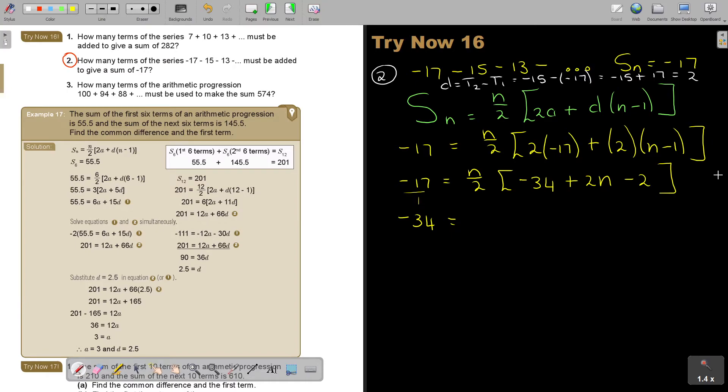So I get negative 34, and then I get rid of the fractions. So it's N, and this is negative 36 now, plus 2N. And as soon as I multiply N, it's negative 36N plus 2N squared. Take everything to one side and put it equal to 0.